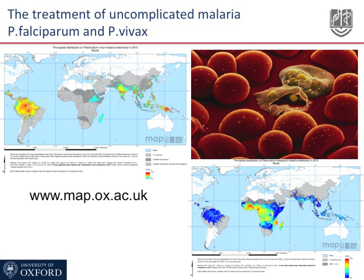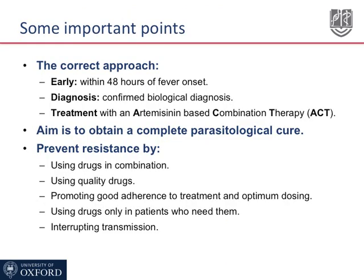This slide's map shows the geographic distribution of the two malaria species. There are some important points to consider when discussing the treatment of uncomplicated malaria. For patients with Plasmodium falciparum infection it is important to see them early, if possible within 48 hours of the fever onset, in order to prevent the evolution to severe infections and also to prevent the transmission of the disease.